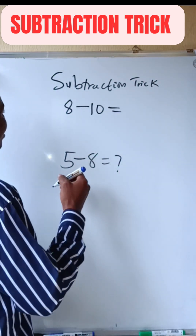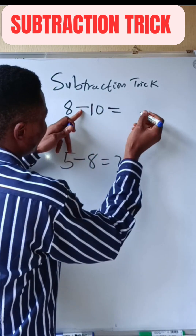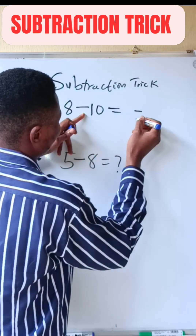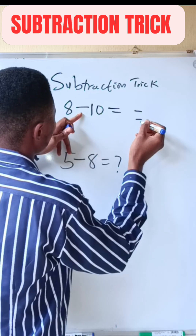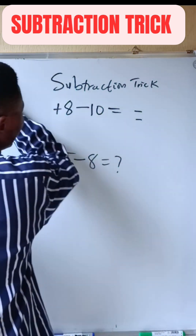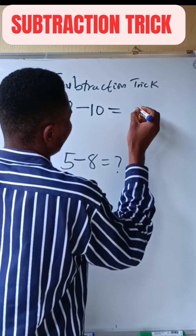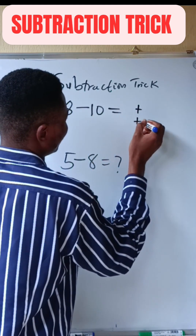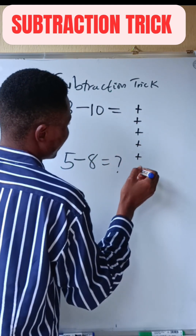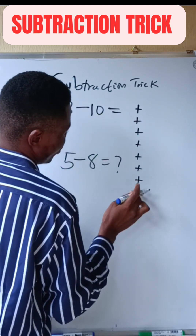In this case, we count the number of negatives and positives. We have 8 plus marks: 1, 2, 3, 4, 5, 6, 7, 8. And we have 10 minus marks: 1, 2, 3, 4, 5, 6, 7, 8, 9, 10.